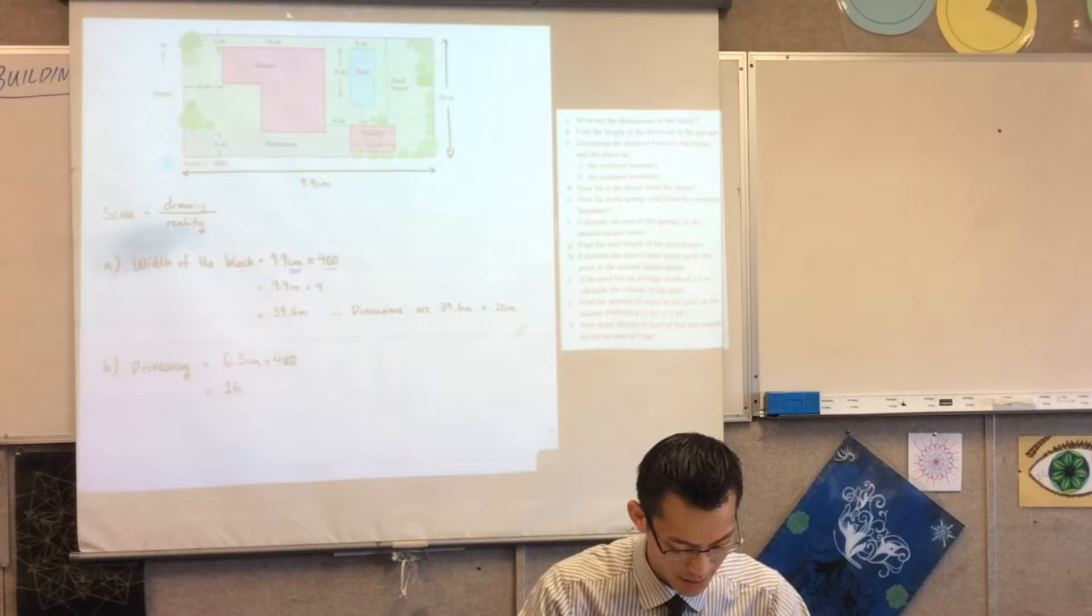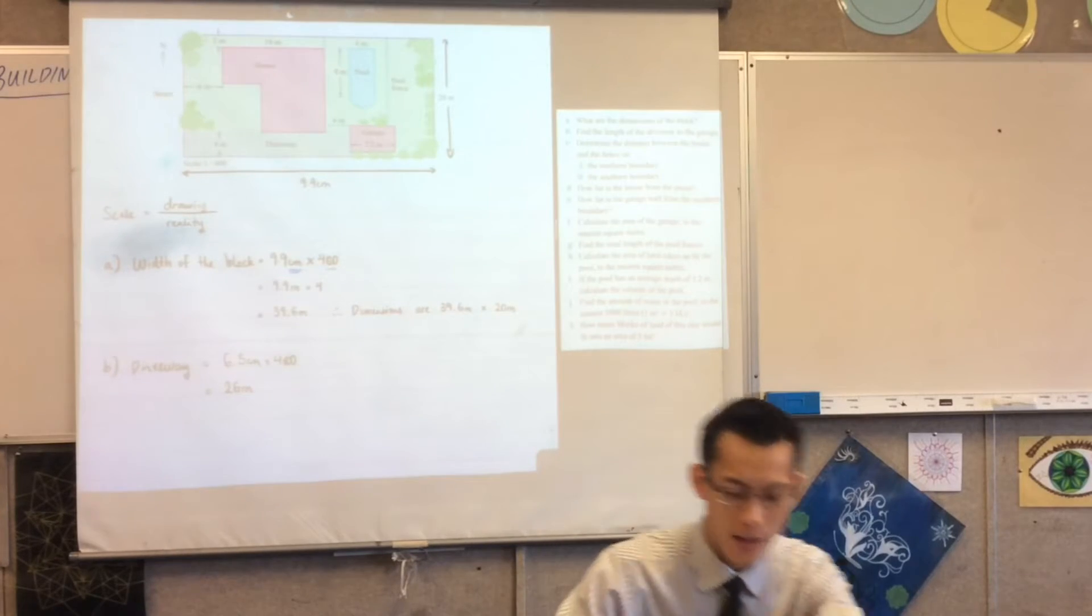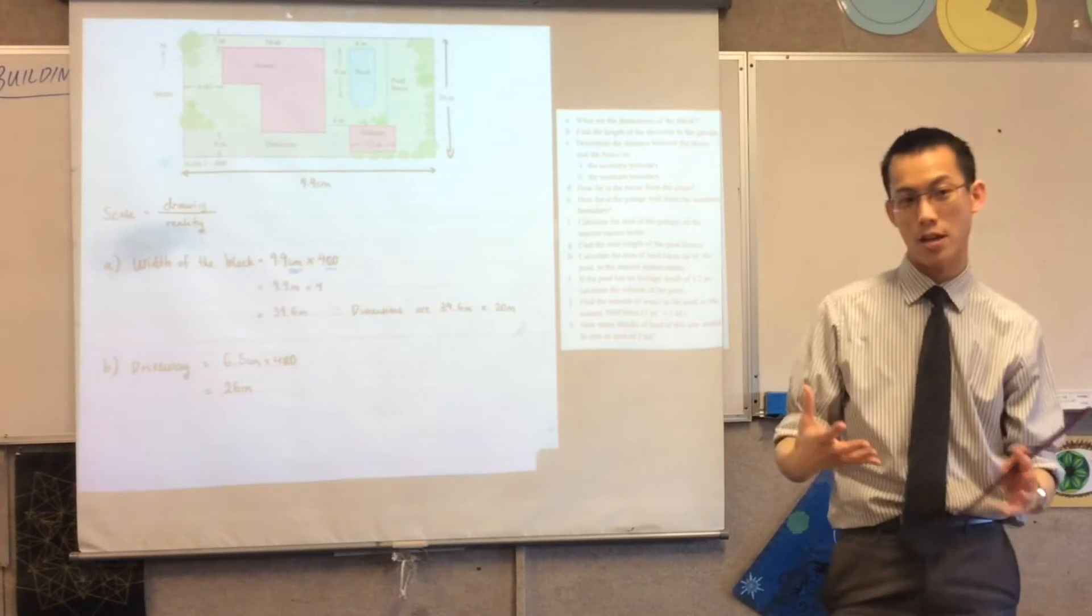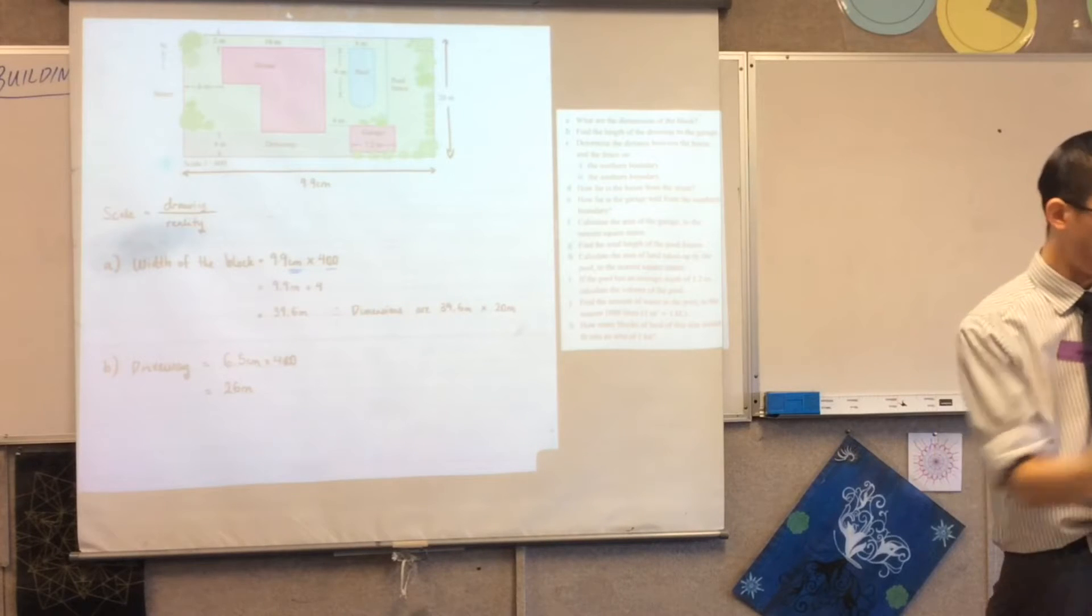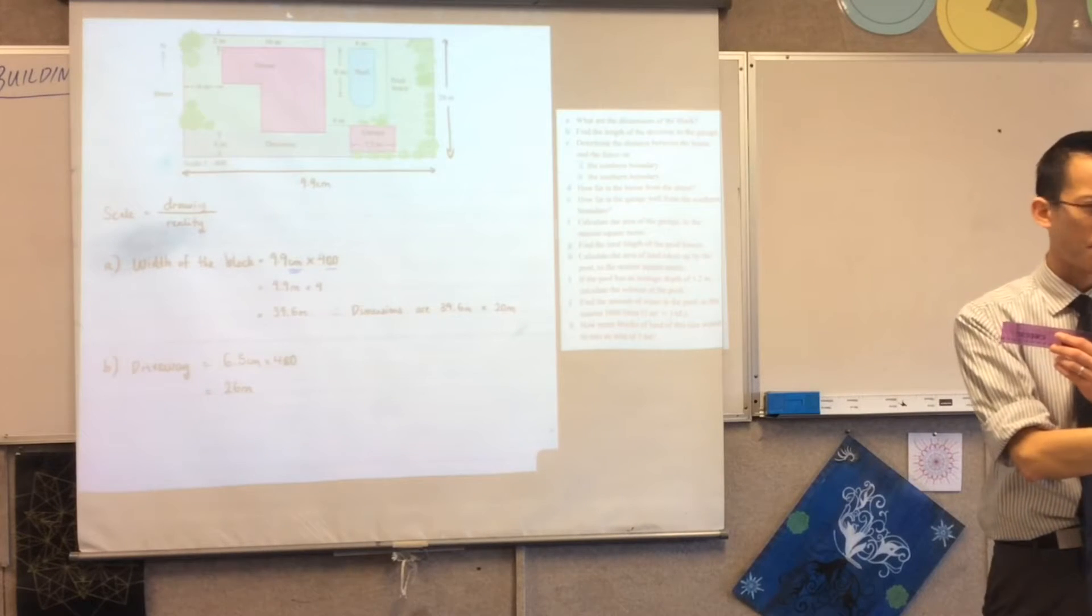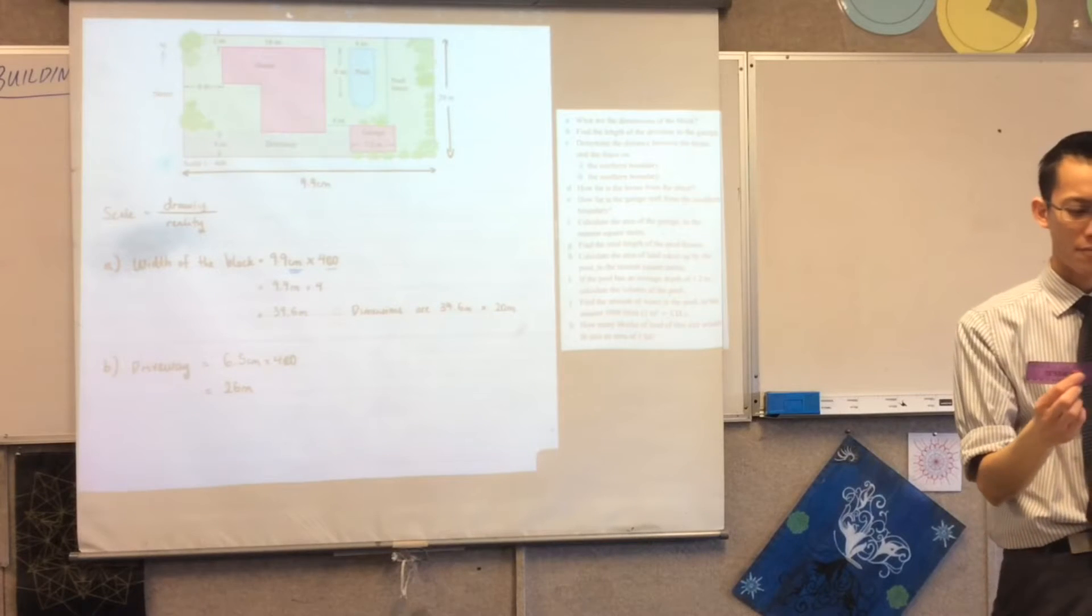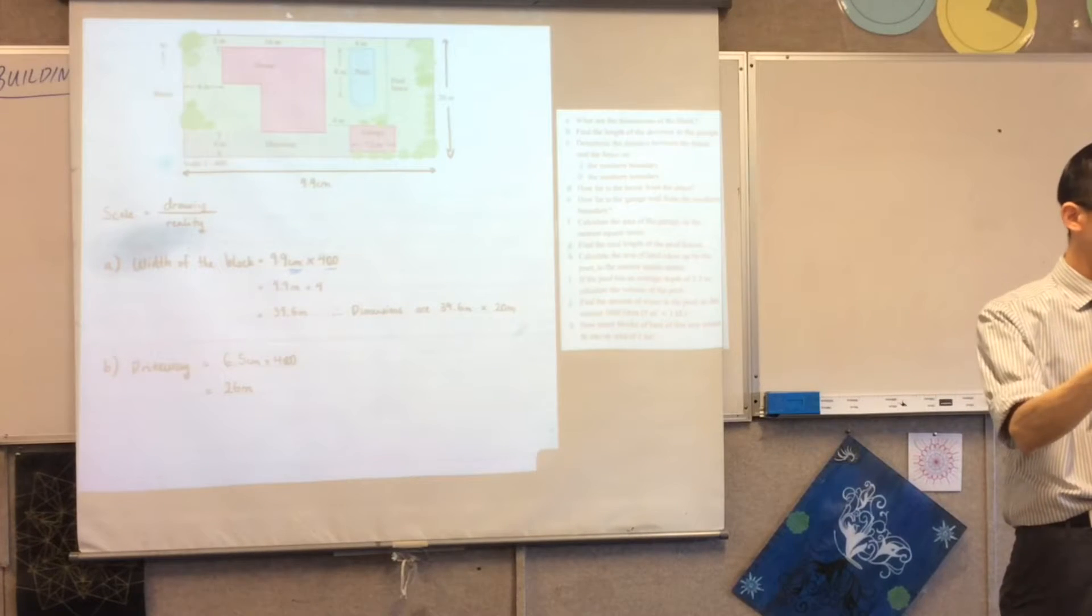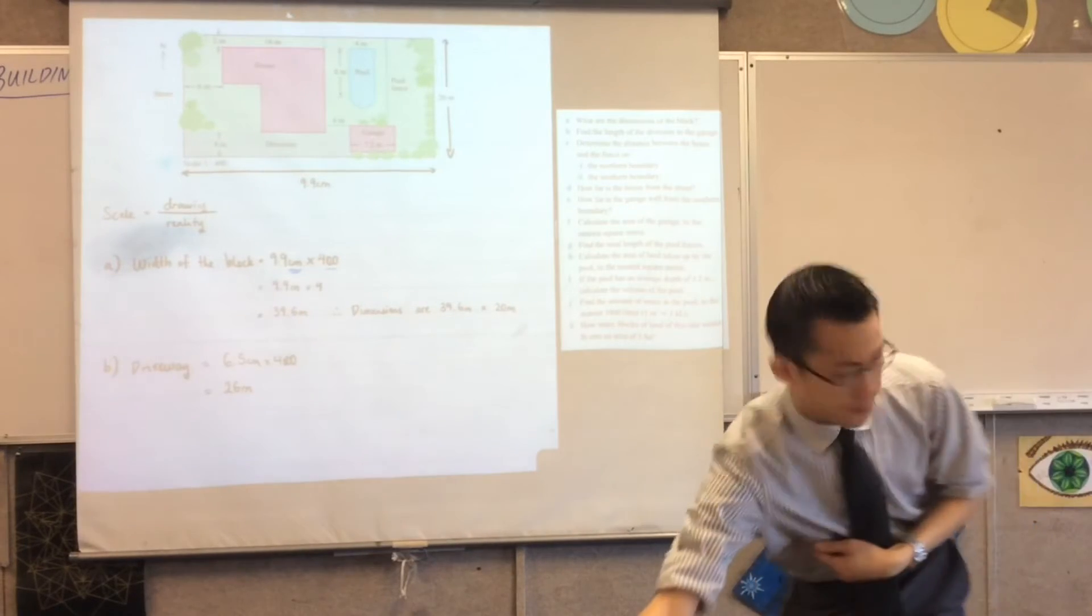Now hold on a second, let's just think about it. If I had measured 6.4 centimeters instead of 6.5 then I multiply by 400, so how far will I be off in the final number, in the real number?